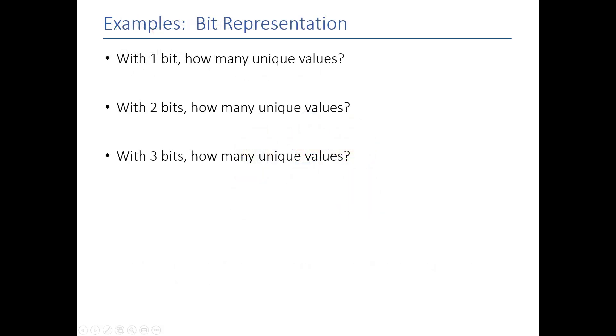So, I need to figure out how many bits I need to encode each one with its own unique value. Let's say I have one bit. I can create two unique values, 0 and 1. If I have two bits, I can create four unique values, 00, 01, 10, and 11. And with three bits, I can do eight unique values.